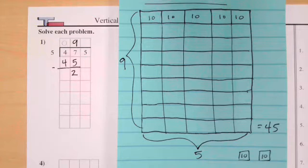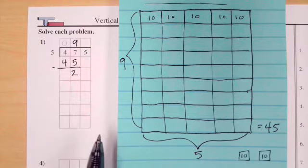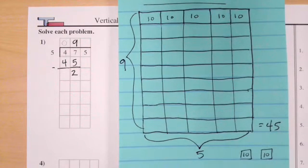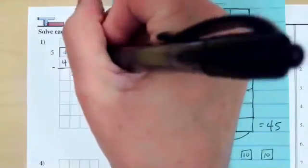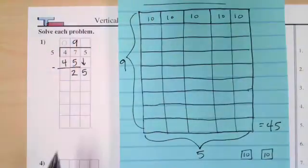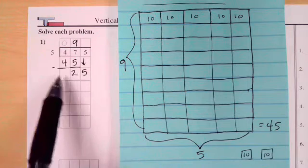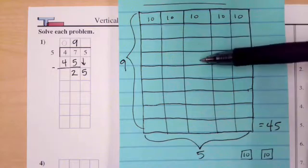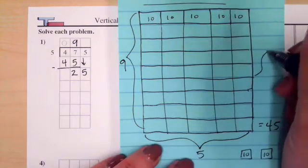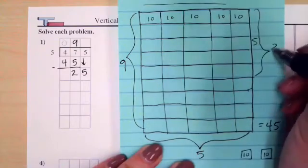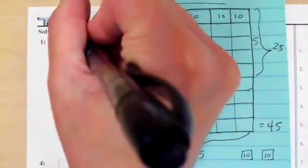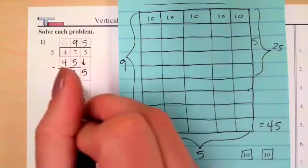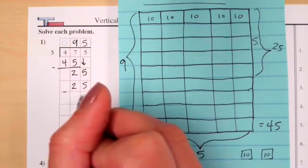You wouldn't always draw this picture — I just wanted to show you what it looks like visually. Now we have two tens left over and also five ones. Another way to think about this is having 25 ones, and we need to make groups of five. How many groups of five can we make with 25? Five, ten, fifteen, twenty, twenty-five — five times five is 25. We were able to make five groups, using exactly 25, so we have no remainder.